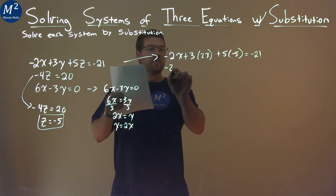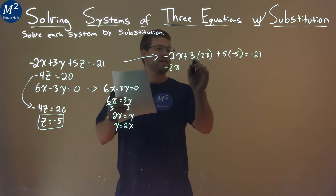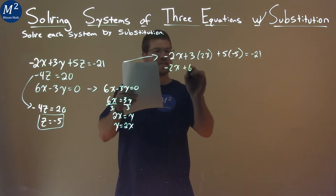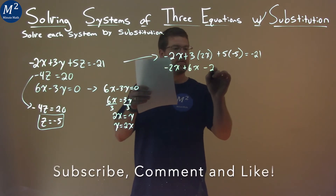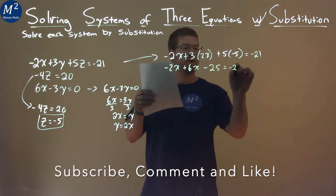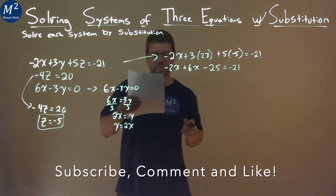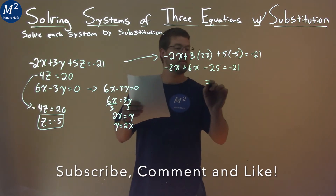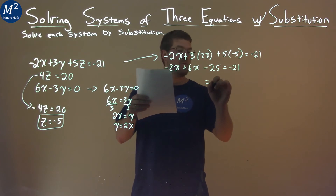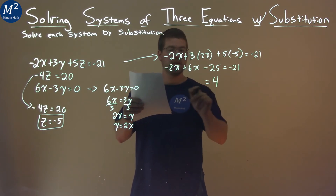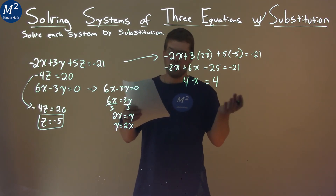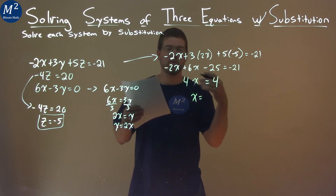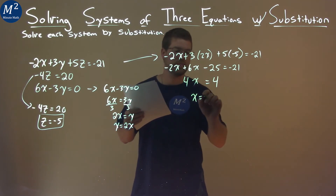Negative 2x comes down, 3 times 2x is 6x, and 5 times negative 5 is minus 25, and that equals negative 21. I add 25 to both sides and I get positive 4. Negative 2x plus 6x is 4x. Divide both sides by 4, and x is by itself — 4 divided by 4 is 1.